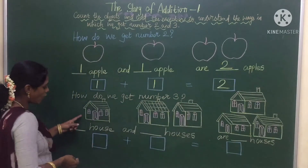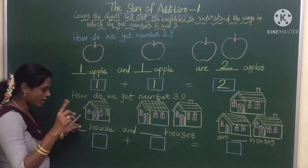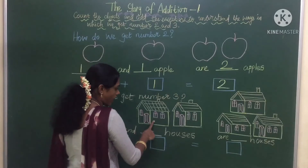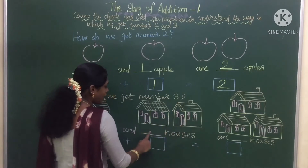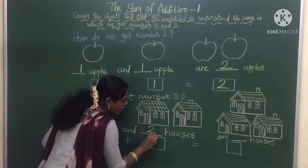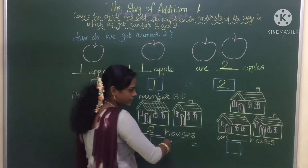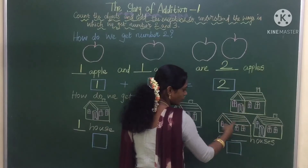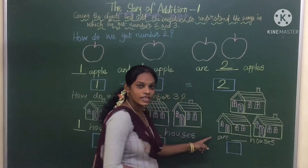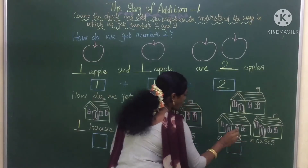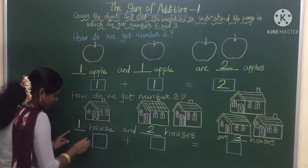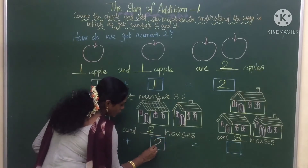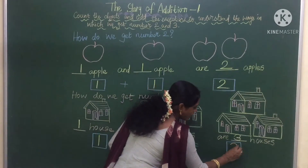Now next. How many houses are there children? One house. So we will write number one. Now we count the houses: one, two. So it means two houses. Now let us count these houses: one, two, three. How many houses are there? Three houses. Now in the box let us write: one plus two is equal to three.